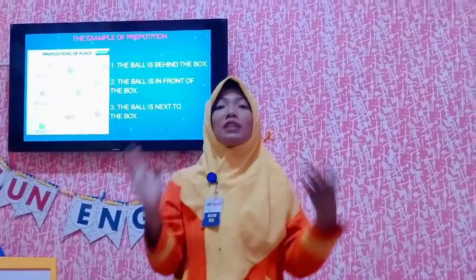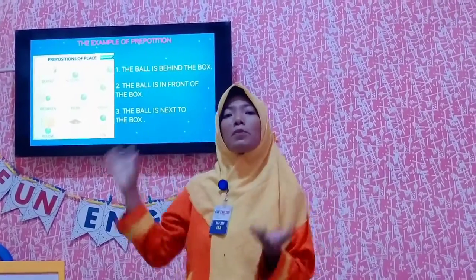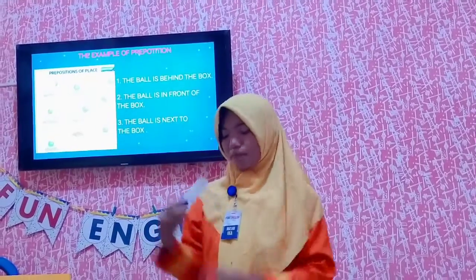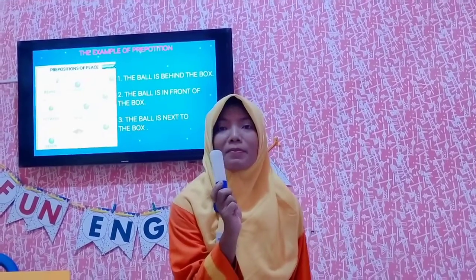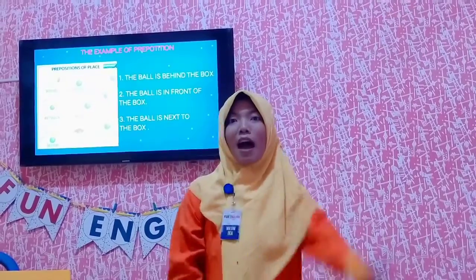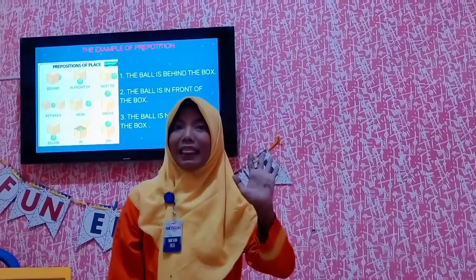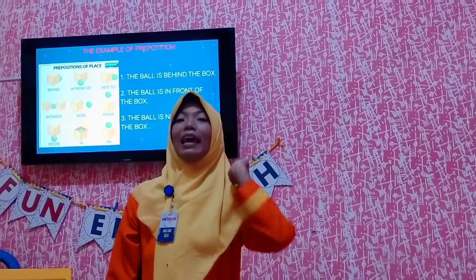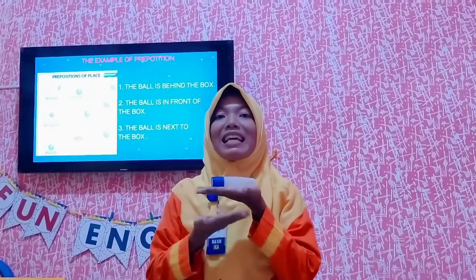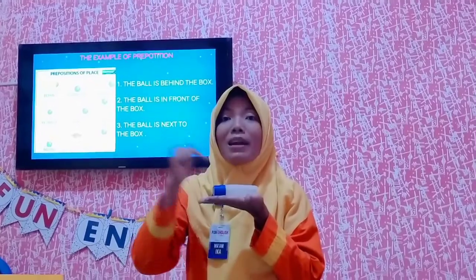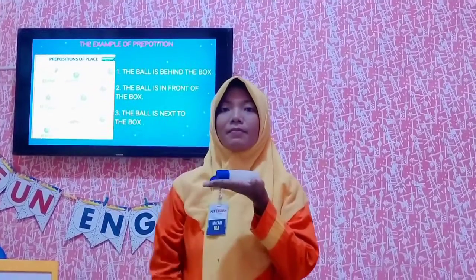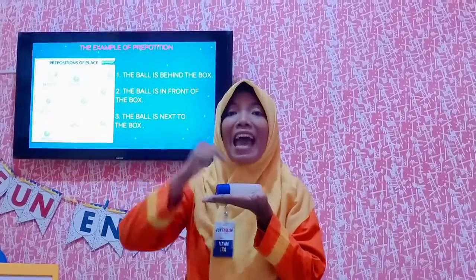I will give you an example of how to use the preposition of place in a sentence. Do you know what this is? Yes, this is glue. How about this one? What is it? This is my hand. I want to ask you, where is the glue, kids? On my hand.